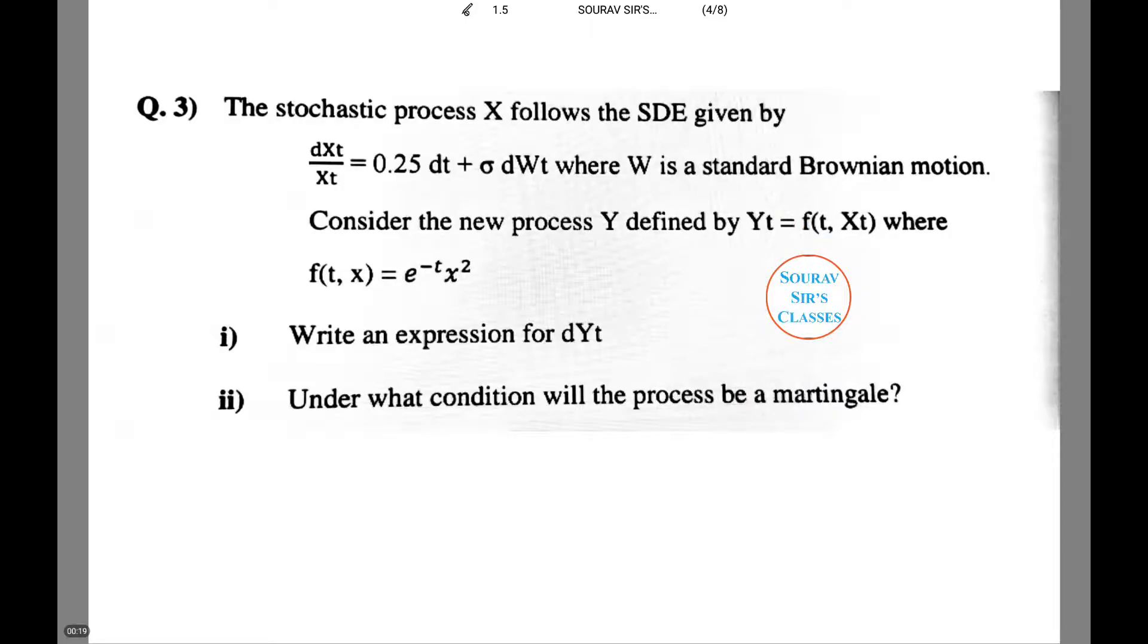The stochastic process X follows the SDE given by dXt/Xt equals 0.5 dt plus sigma dWt where W is a standard Brownian motion.